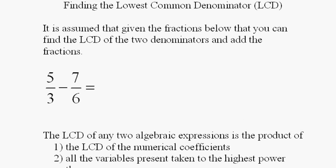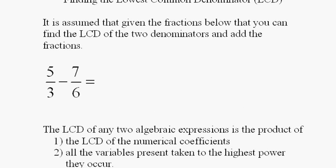The lowest common denominator or least common multiple of any two algebraic expressions is the product of the lowest common denominator of the numerical coefficients and all variables present taken to the highest power they occur.